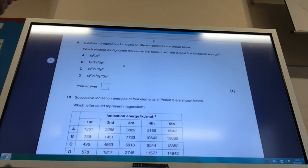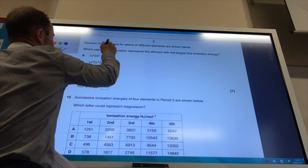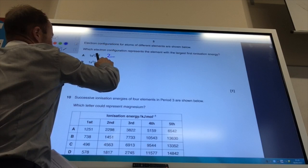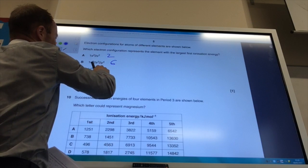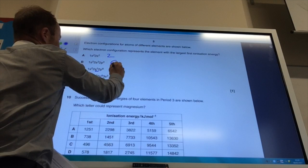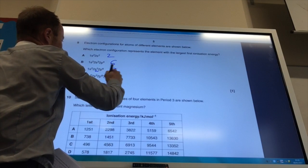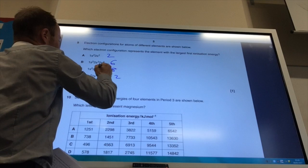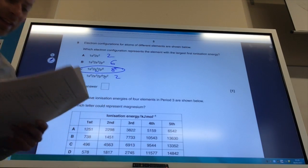Which electronic configuration represents the element of the largest ionization energy? This element is in group 2, this element is in group 6 because I've got 6 electrons, that element is in group 8, and this element is in group 2 but in the third shell. It's got to be the one that's in group 8, so the answer is C.